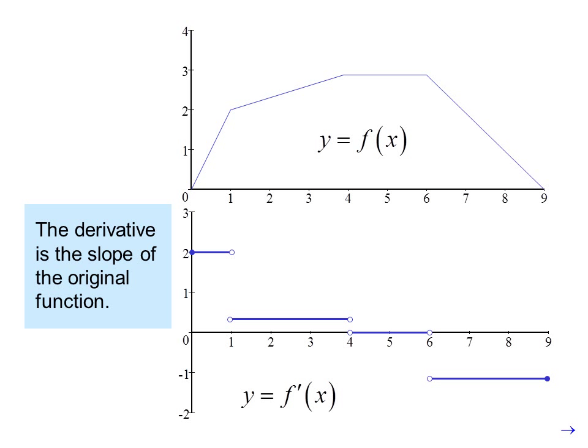And from 6 to 9, the slope is negative one, so the derivative is negative one. Notice that when the original function has corners here, here, and here, the original function does not have a slope defined, so the derivative is not defined.